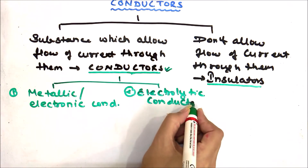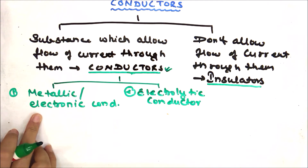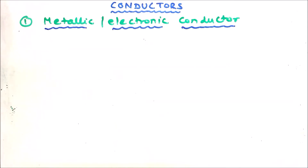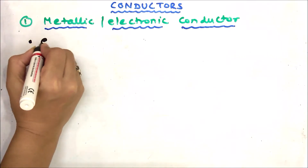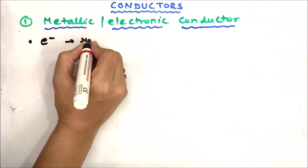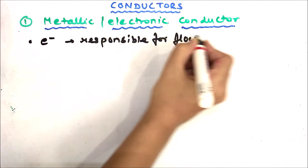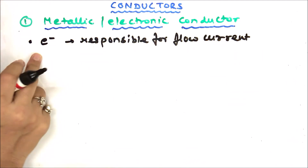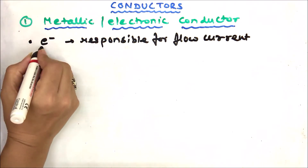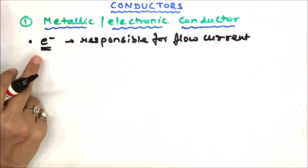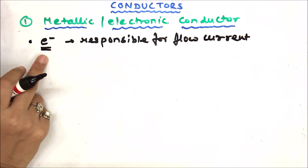We have to deal with both terms — what does metallic or electronic conductor mean, and what does electrolytic conductor mean. Let's start with the metallic conductor. In a metallic conductor, electrons are responsible for the flow of current. Only and only electrons are responsible; no other matter is responsible for the flow of current.